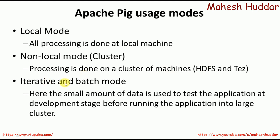The third mode is called iterative or batch mode. Here, a small amount of data is used to test the application at the development stage before running the application on a large cluster. Before using the program you have written in Apache Pig on a cluster of machines, first test it with a very small amount of data on a local machine. If it is working fine on a local machine, then we can deploy it into a large cluster with a large dataset. You can say it is a testing mode.